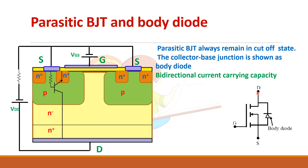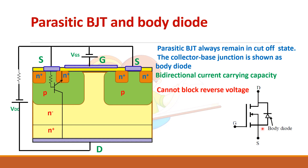When the MOSFET conducts, it will carry current from drain to source, but in some applications when the MOSFET is off, this body diode can carry the full current in the opposite direction. The problem with this body diode is that the device will not be able to block the reverse voltage, because either this conducts or that conducts, so it cannot block the reverse voltage.